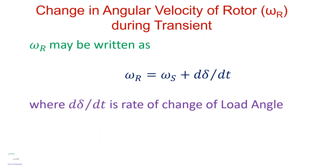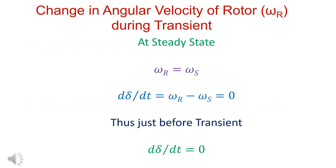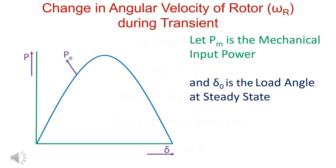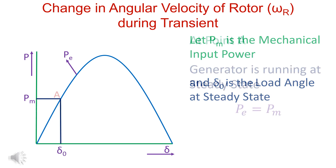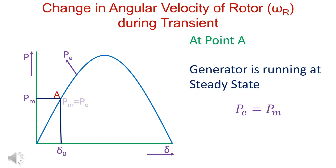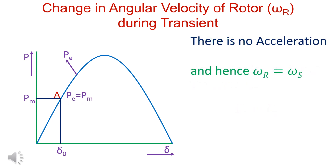Omega_r is equal to omega_s plus d(delta)/dt. At steady state, omega_r is equal to omega_s; therefore, d(delta)/dt is equal to 0. Thus, just before the transient, d(delta)/dt is equal to 0. At steady state, let mechanical power input be PM and load angle be delta_0. Input mechanical power PM is equal to output electrical power PE. Since PE equals PM, acceleration is zero and hence omega_r equals omega_s.